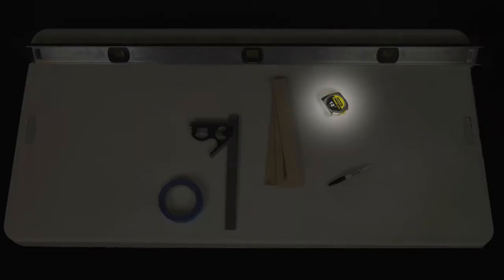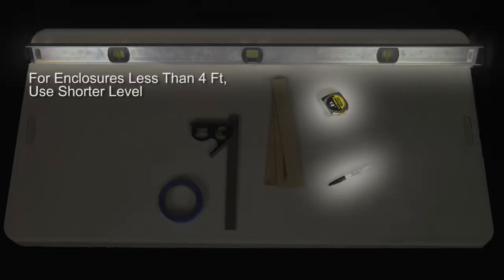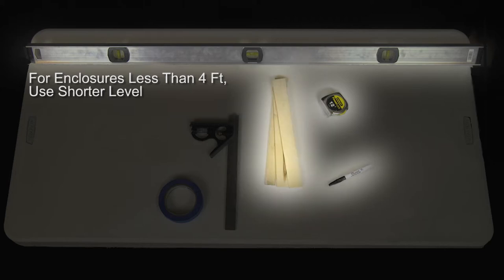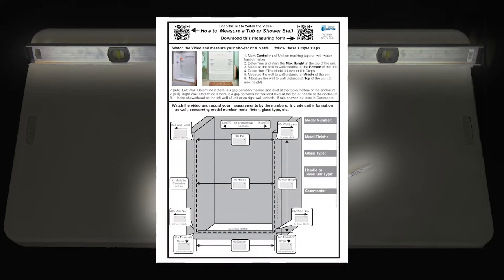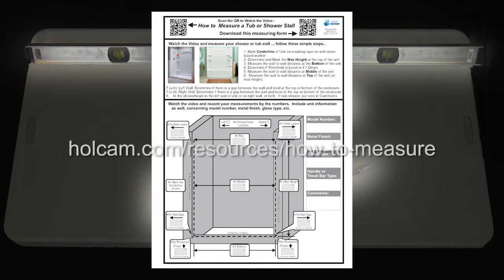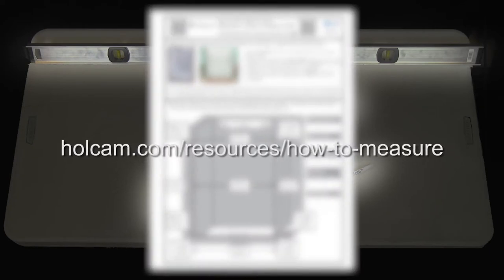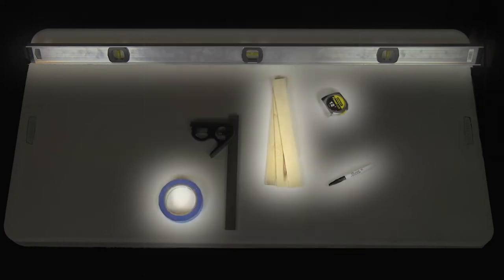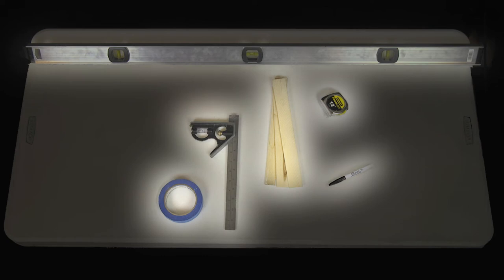A 12-foot tape measure, a 4-foot level, a water-soluble felt pen or marker, wood shims, a paint mixing stick or similar shimming material, painter's tape, and the official Holcomb door and panel measuring sheet available at Holcomb.com slash resources slash how-to-measure. A combination square is not required but can be very helpful during measuring and installation.